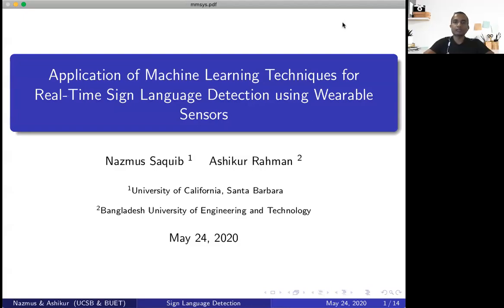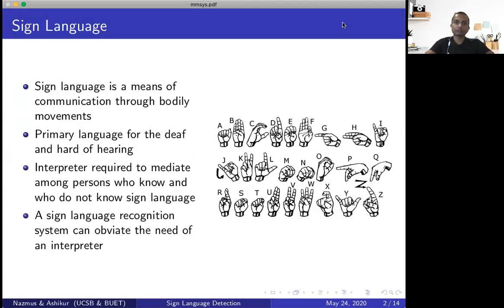In this work, we design and implement a system to detect sign language in real time. I'm first going to start with a brief overview of sign language. Sign language is basically a mode of communication primarily used by the hearing impaired community, which involves mostly hand gestures. You can see an example of the English alphabet signed according to the standards of American Sign Language on the right.